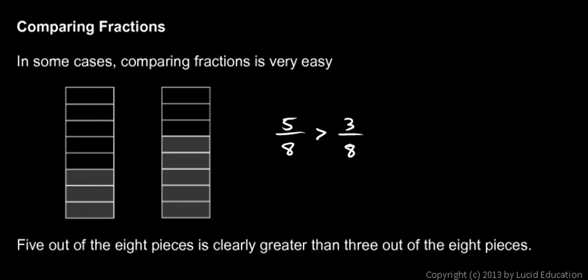The reason these were easy to compare is because they were like fractions. They were both eighths. 5 eighths was bigger than 3 eighths. Those fractions both have the same denominator.